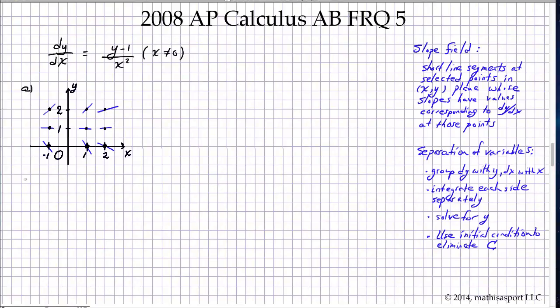Part B is really the heart of the problem, namely using the technique of separation of variables to solve the differential equation given an initial condition. So we have dy/dx equals (y minus 1) over x squared, and they're also giving us an initial condition of 2 comma 0.